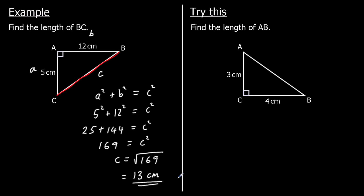A question for you to try: find the length of AB. So again, we're finding the longest side in a right angled triangle — the hypotenuse. We know it's a right angled triangle, so we can use Pythagoras. A squared plus b squared equals c squared. The two shorter sides are a and b, and the longest side is c, the one opposite the right angle.